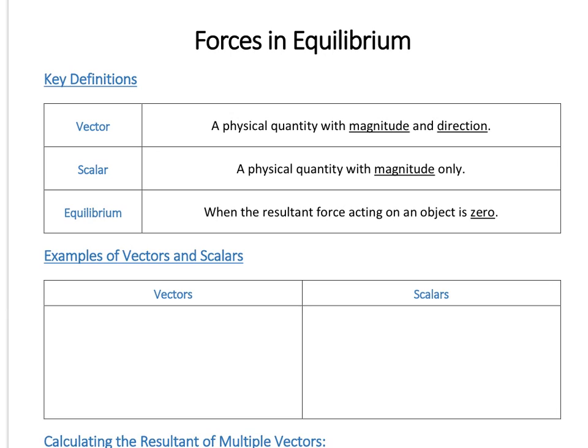Let's pick a starting point and check we know the definitions of different things. A vector is a physical quantity with magnitude and direction, whereas a scalar only has magnitude.